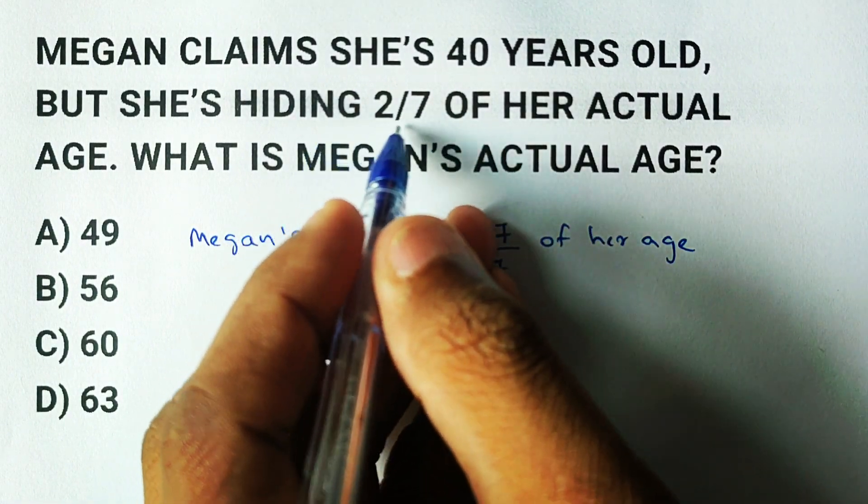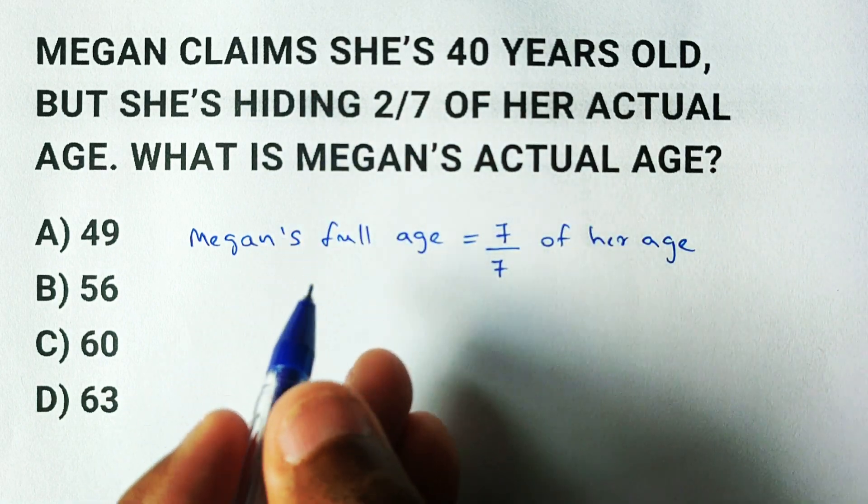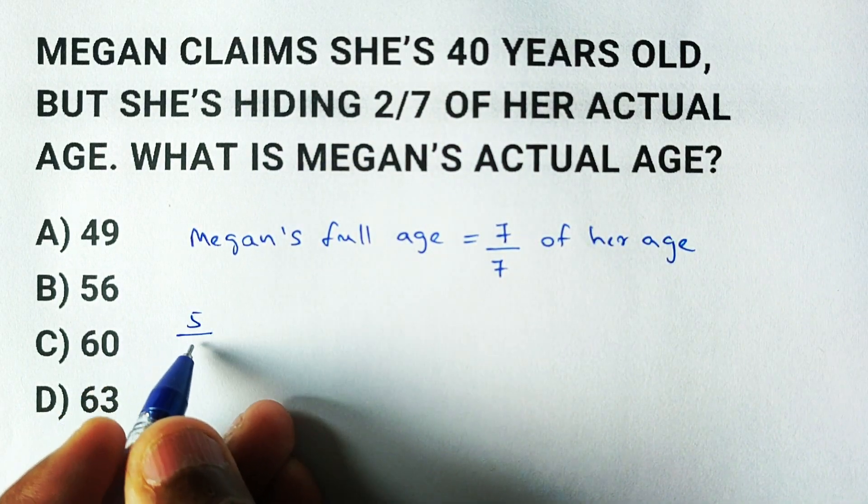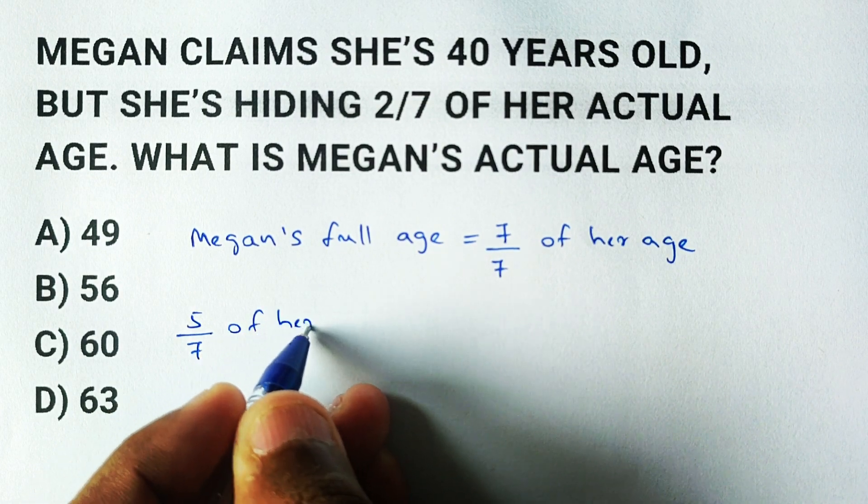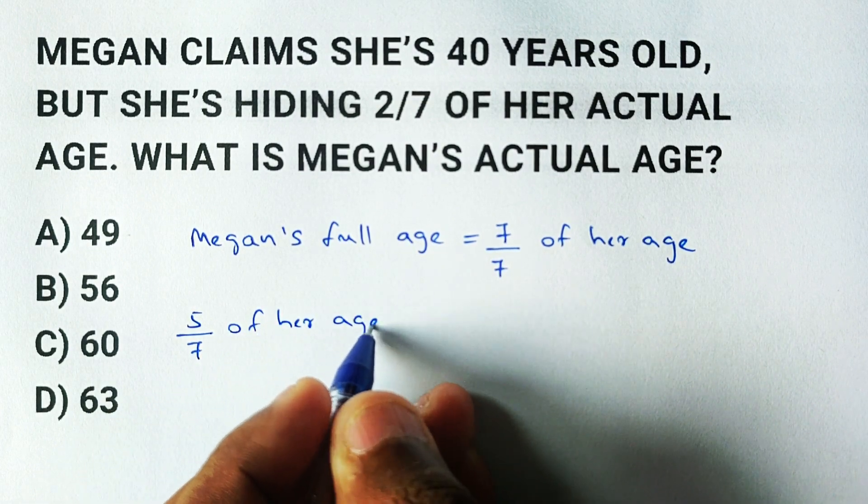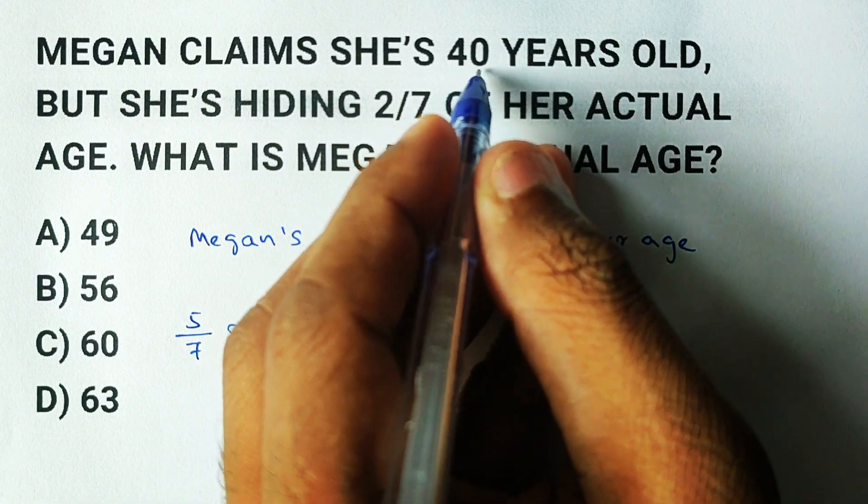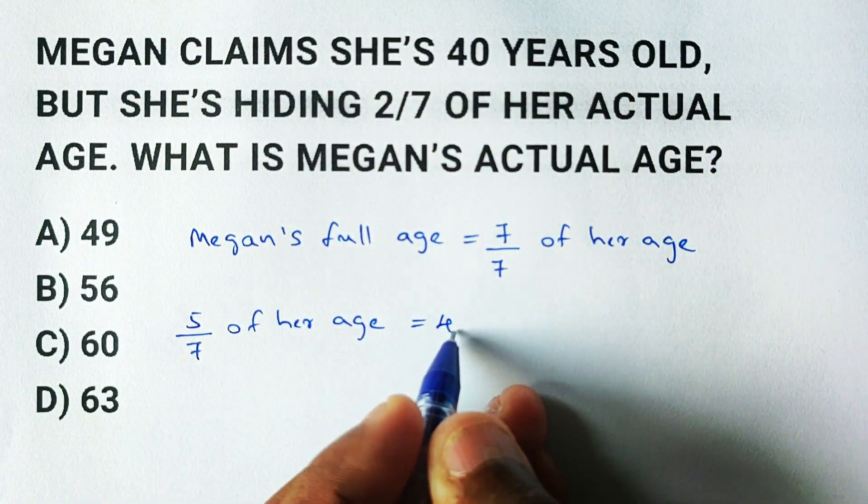When we say Megan is hiding two sevenths, we are saying she's only showing us the remaining five sevenths of her real age. So the 40 years she claims is only five sevenths of her full age.